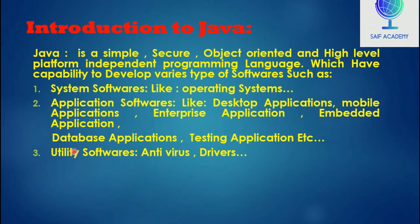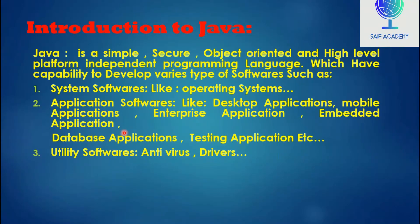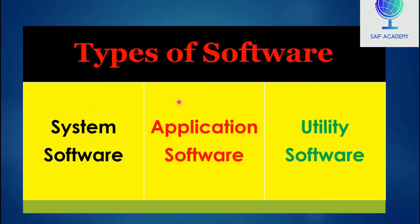Utility software are programs which run for a specific purpose, like various drivers. In general, there are three types of software: system software, application software, and utility software.